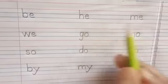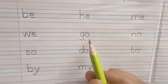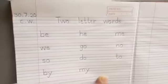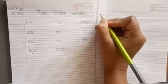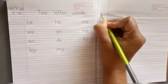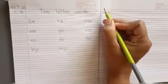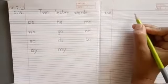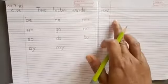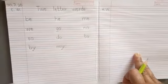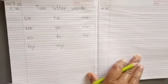So now let's read again: be, he, me, we, go, no, so, do, to, by, my. These are the two letter words for today. Now you have to do homework. On the right hand side page you will write H dot W dot, that is homework. Write the date in the corner and parents will write the heading. Children, you have to start from the second line — be to my. That's all for today. Bye bye!